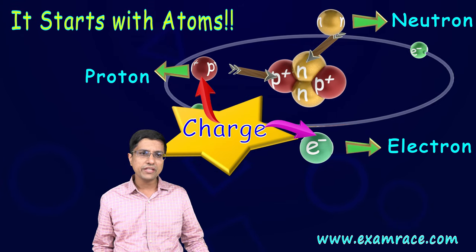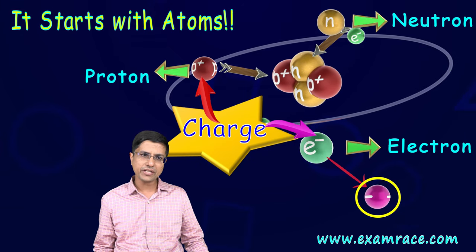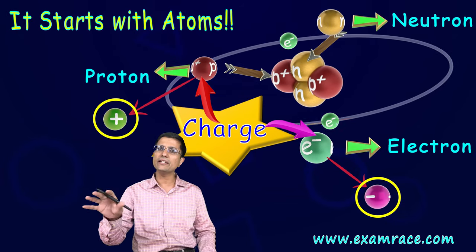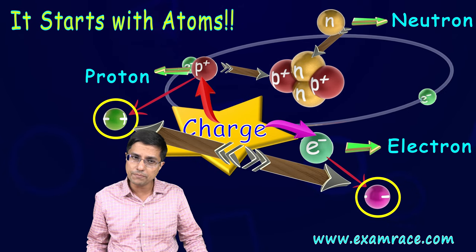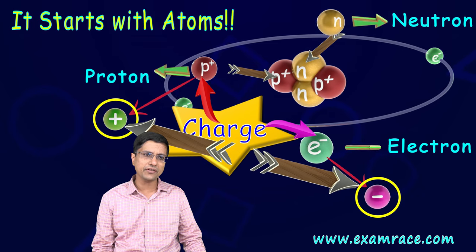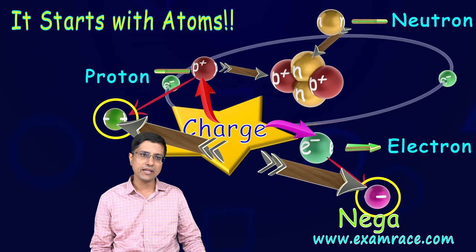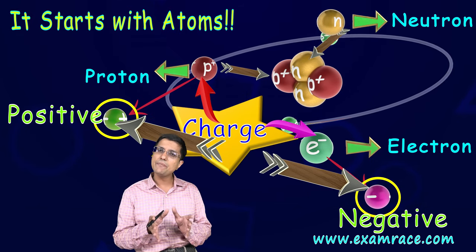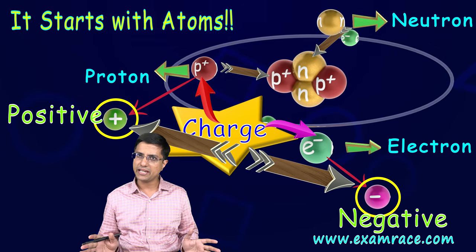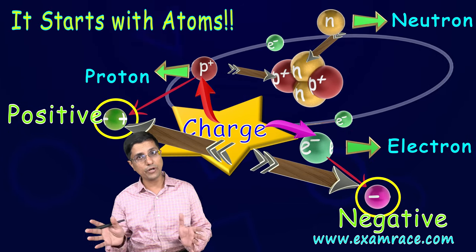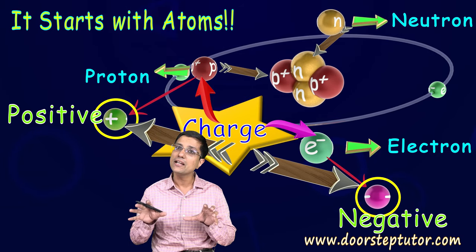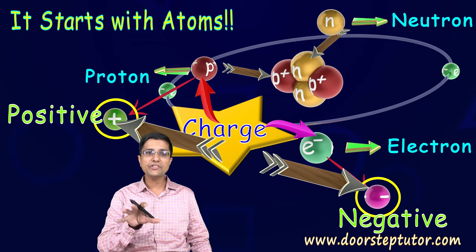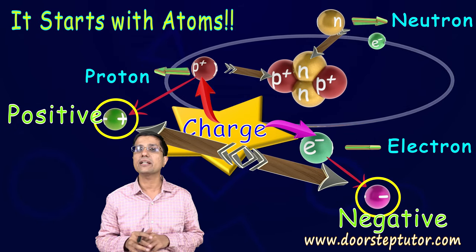The charge on an electron is different from the charge on protons. Scientists did some experimentation and understood this difference. To keep things simple, they named the charge on the electron as negative and the charge on the proton as positive. This naming was 100% arbitrary — it is just a convention.